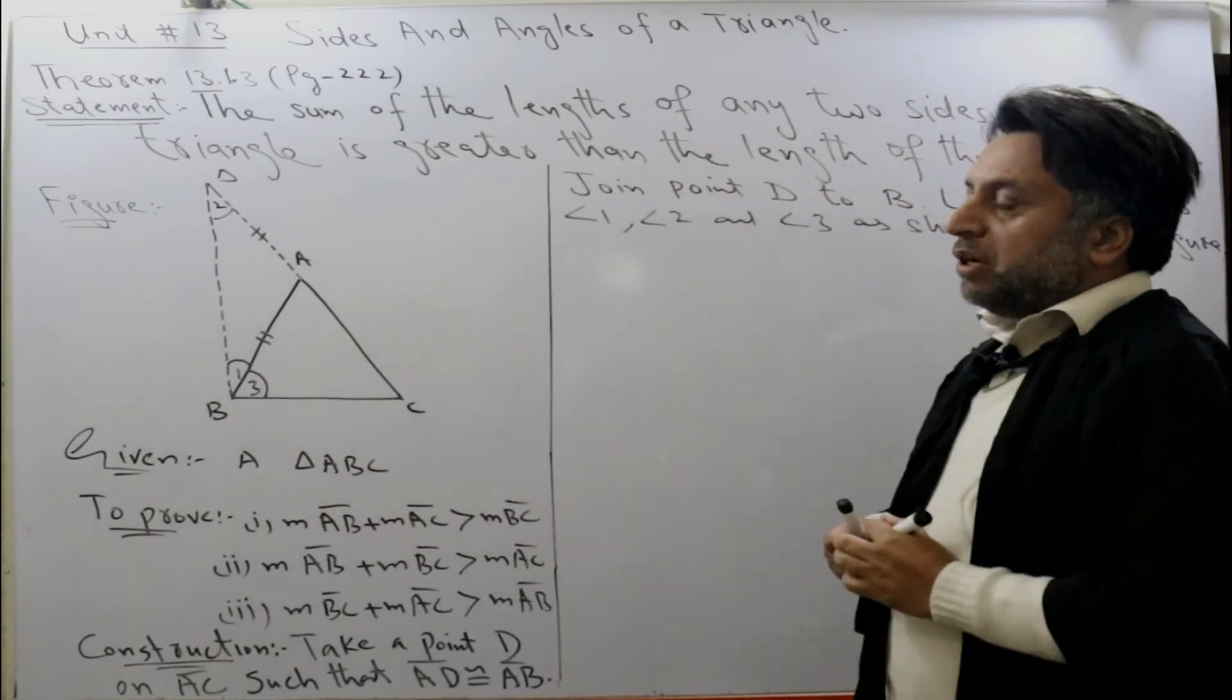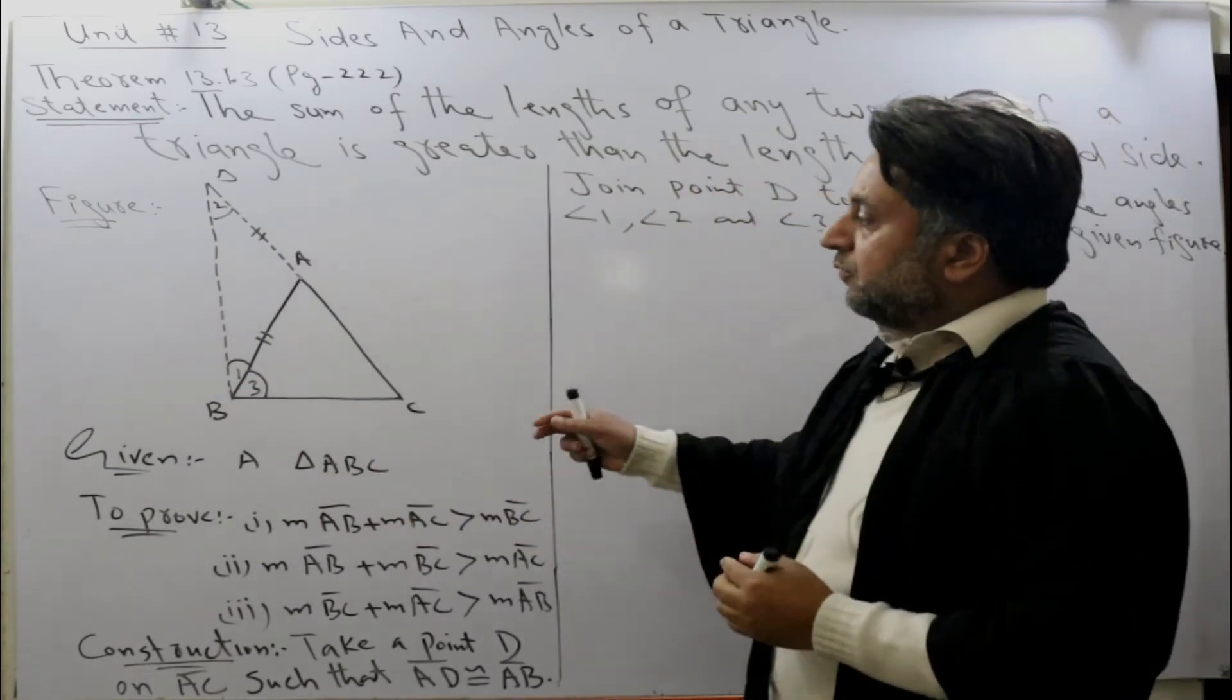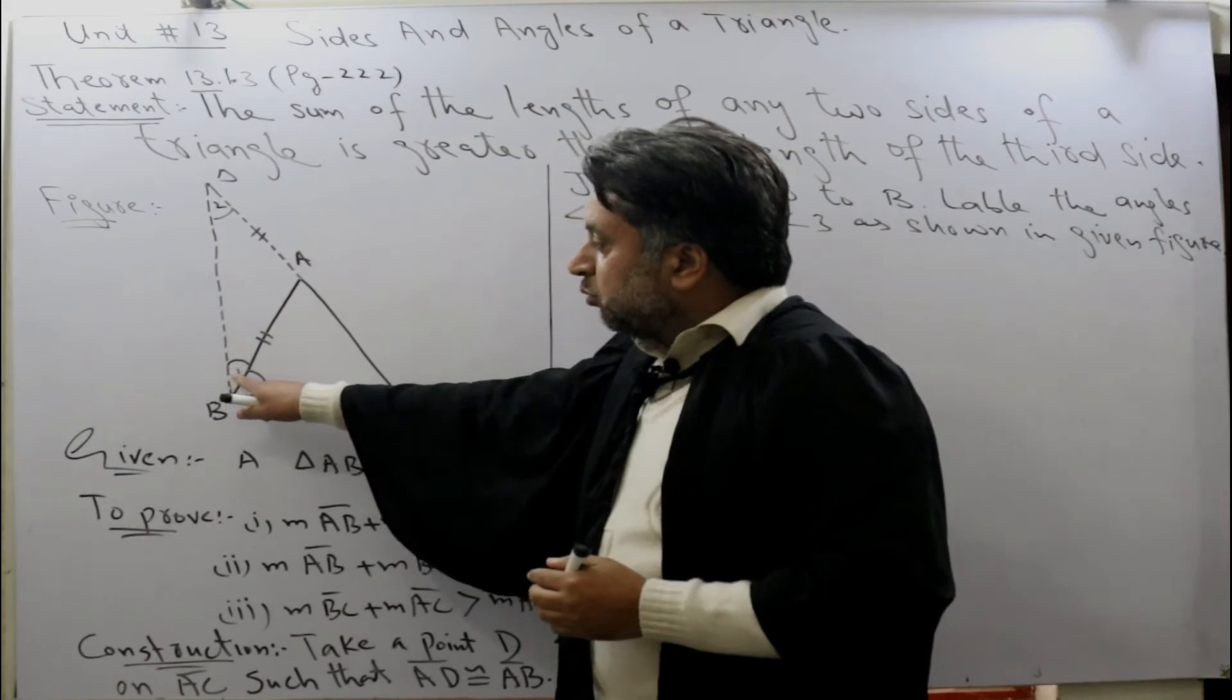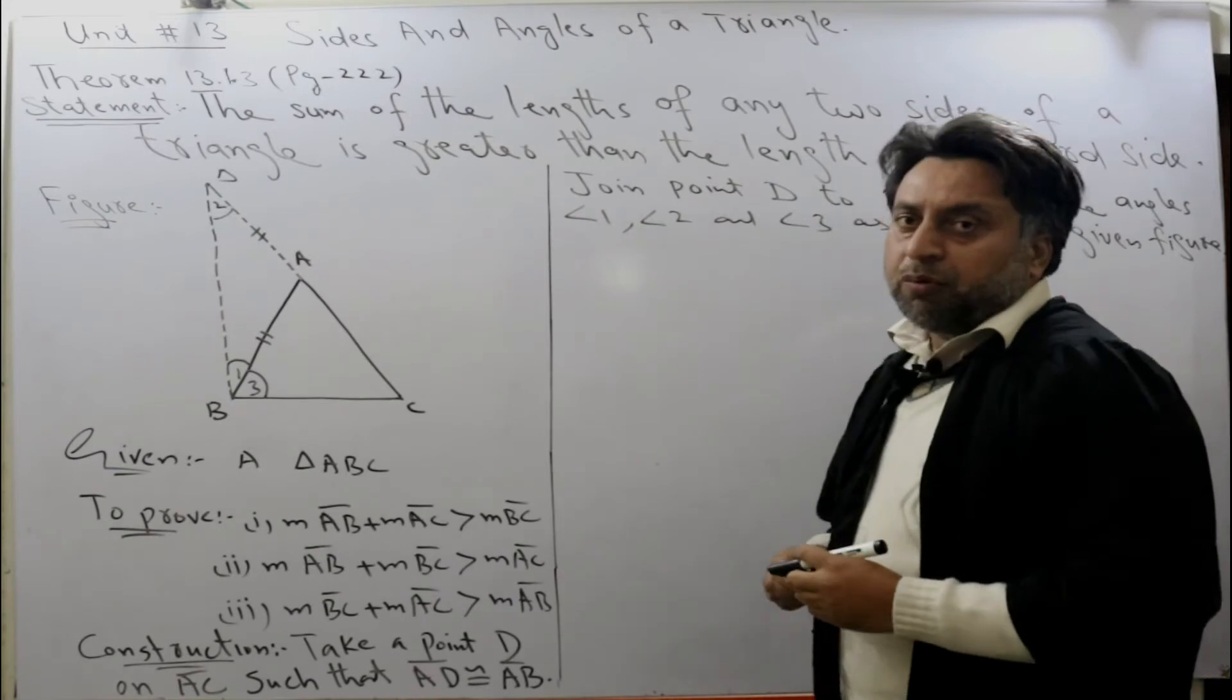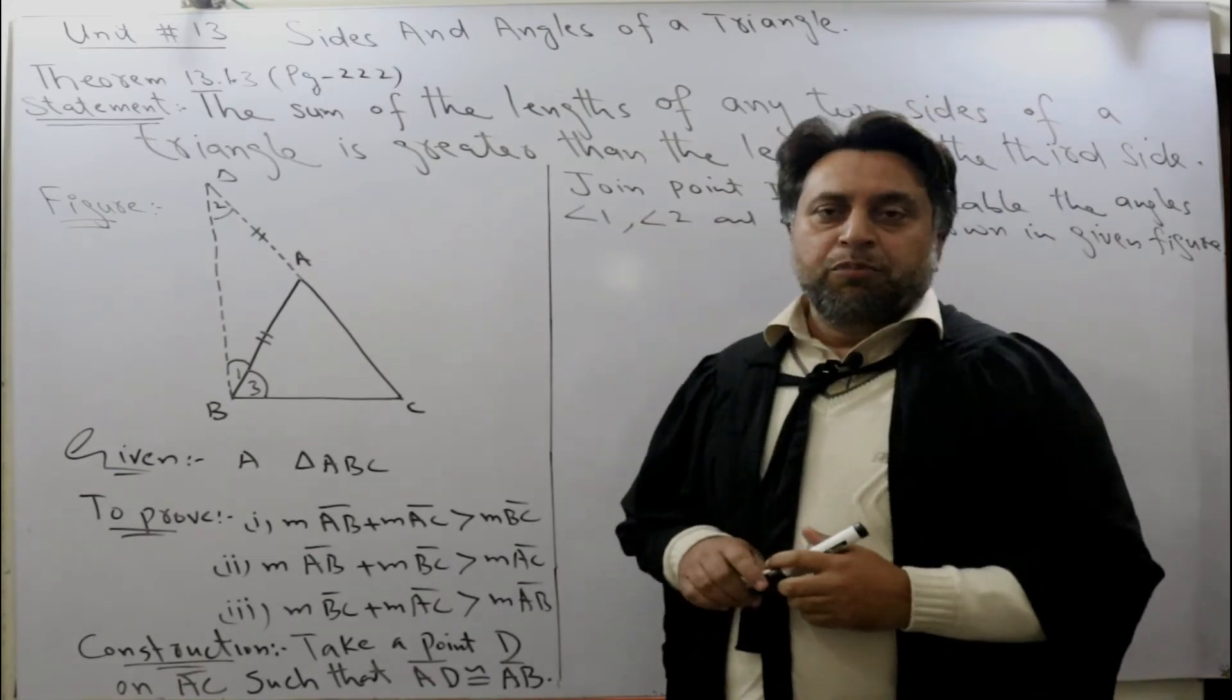Label the angles as angle 1, 2, and 3 as shown in the figure. This angle is angle 1, this is angle 2, and this is angle 3. Now the most important part of the theorem is proof.